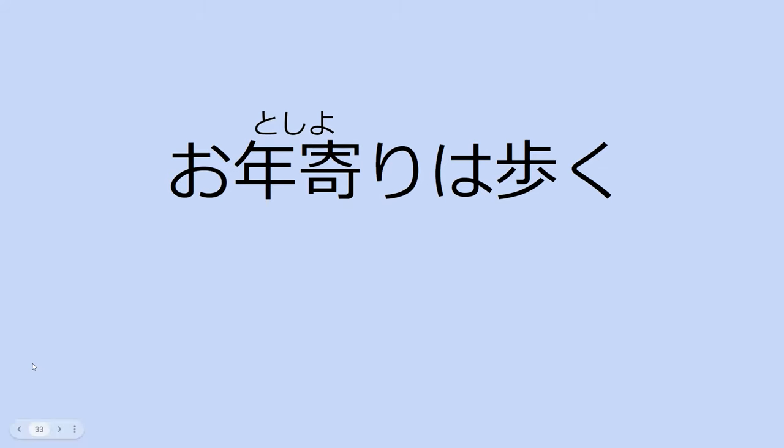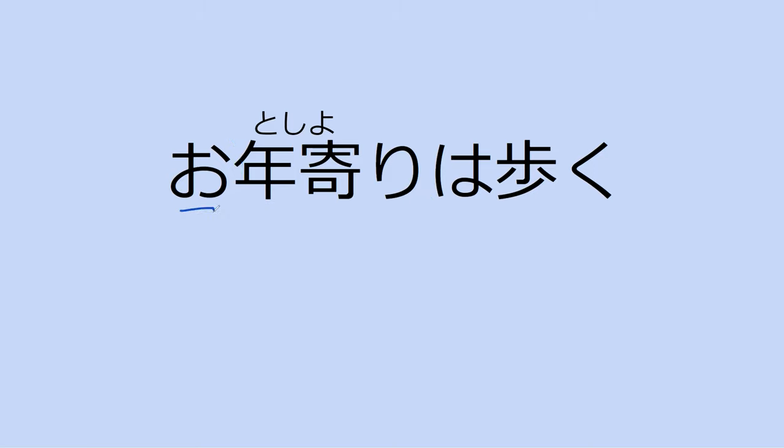An elderly person walks. Yes, an elderly person walks. So if you want to say the word 'elderly,' you have to add お, but if you want to use this as a descriptor you don't need the お. The お just helps to make this a little more polite. So someone who's elderly is walking or will walk.